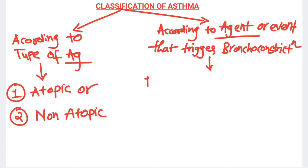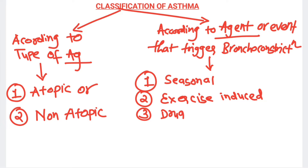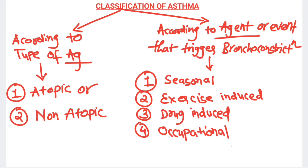According to the agent or event that triggers bronchoconstriction, asthma can be divided into five categories: first is seasonal asthma, second is exercise-induced asthma, third is drug-induced asthma, fourth is occupational asthma, and fifth is smoking-induced asthma. This is the classification of asthma.